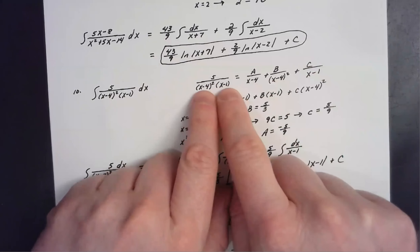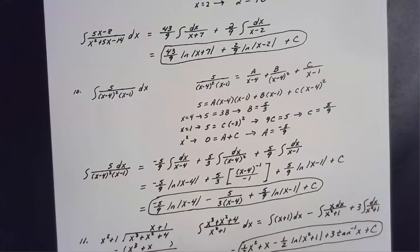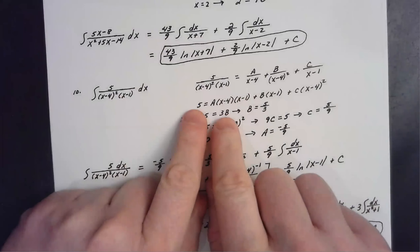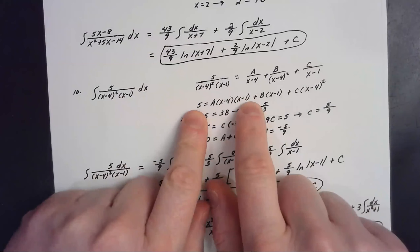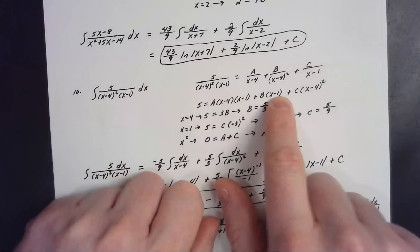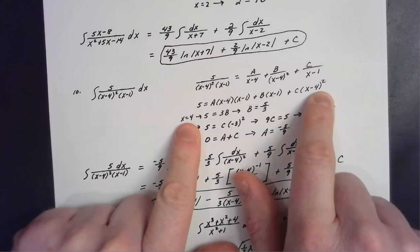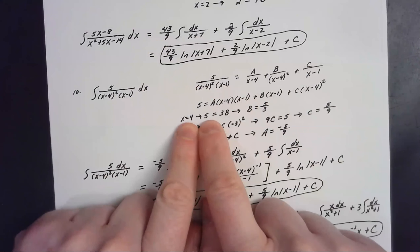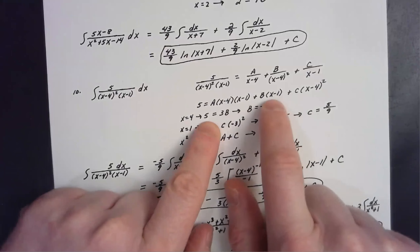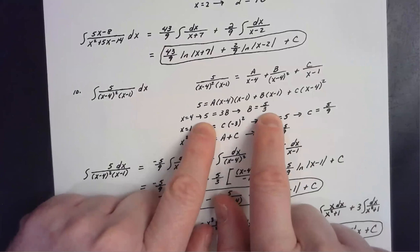First, multiply by the LCD, (x − 4) squared times (x − 1), on both sides. On the left you get 5. On the right: A times (x − 4)(x − 1), plus B times (x − 1), plus C times (x − 4) squared. Letting x equal four, A and C cancel — left side stays 5, right side gives (4 − 1) times B, so 3B = 5, thus B = 5/3.